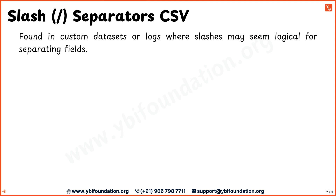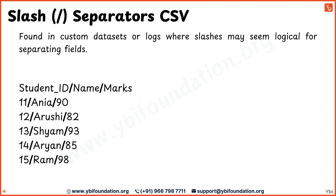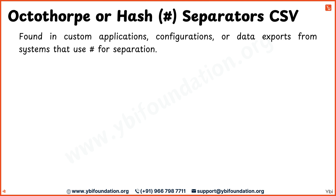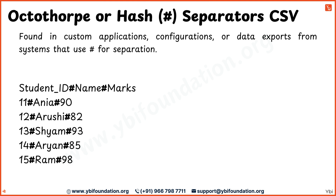In certain custom datasets or log files, slashes are used as the separator. This format is often found in data structures where slashes naturally fit the context. The slashes divide the fields, offering a simple and clean way to separate the data. In some custom applications, the hash symbol or hashtag is used to separate fields — often chosen when other common separators like commas or colons are already in use within the data. The hash symbol acts as a unique separator, making it easier to handle and process the data.